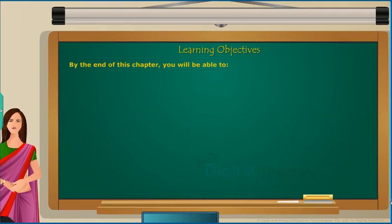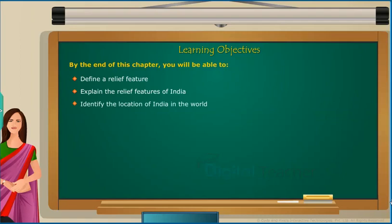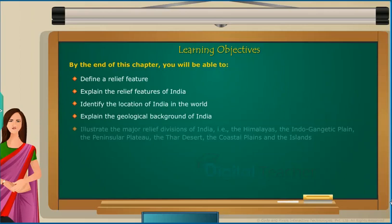By the end of this chapter, you will be able to define a relief feature, explain the relief features of India, identify the location of India in the world, explain the geological background of India, and illustrate the major relief divisions of India: the Himalayas, the Indo-Gangetic Plain, the Peninsular Plateau, the Thar Desert, the coastal plains, and the islands.